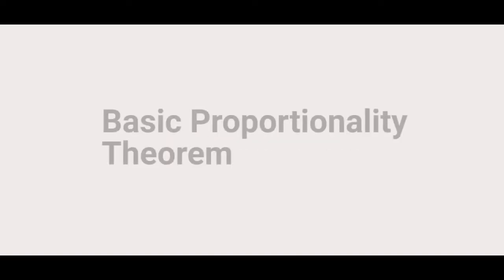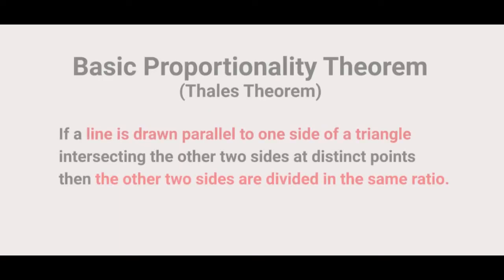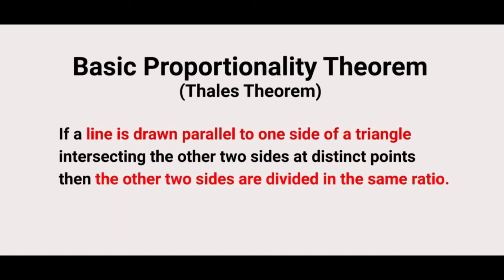Hello everyone, so today we're going to do a practical verification of the basic proportionality theorem. We have already talked about this theorem in one video. So if a line is drawn parallel to one side of a triangle intersecting the other two sides at distinct points, then the other two sides are divided in the same ratio. That is the statement of this theorem.